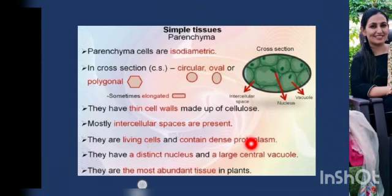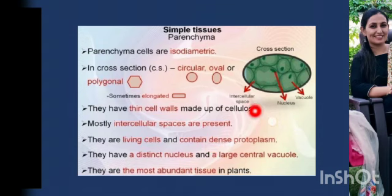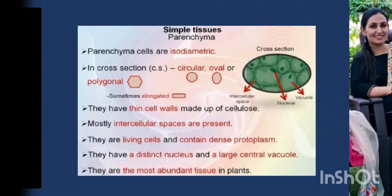Parenchyma cells are living cells containing dense protoplasm. They have a prominent nucleus and a large central vacuole. As mentioned, these are the most abundant tissues found in plants. They are mostly found in roots, stems, leaves, flowers and fruits, constituting a major vegetative ground tissue. They occur in the epidermis, cortex, pith, pericycle and mesophyll of leaves, and also in the pulp of fruits and endosperm of seeds.